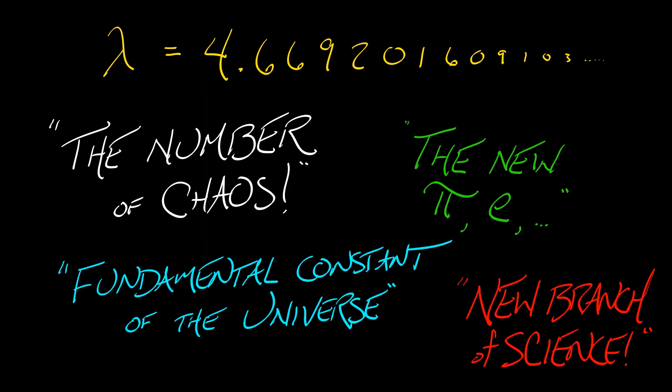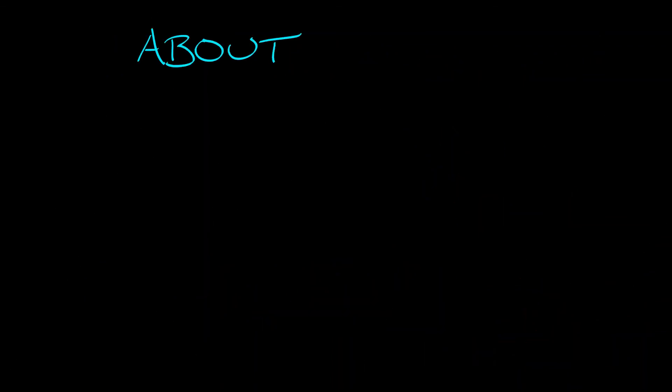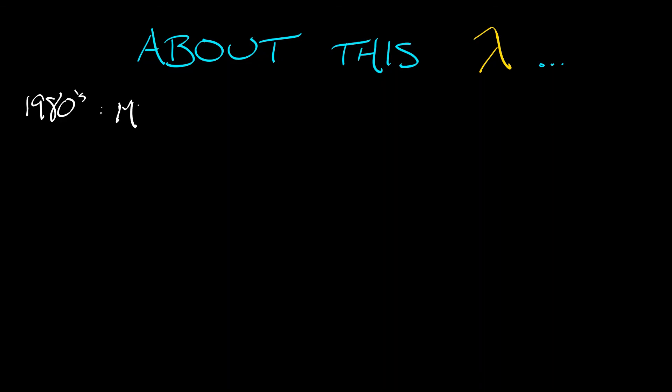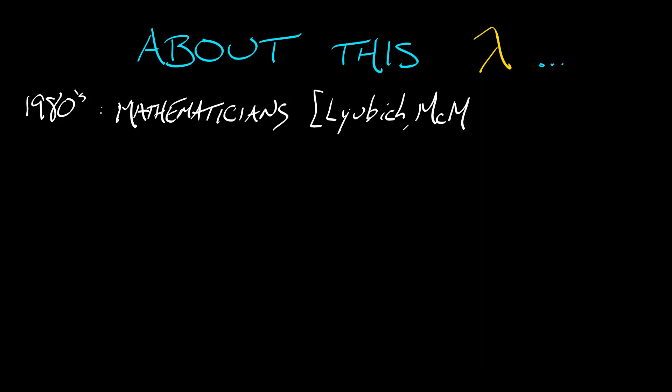It's a little hard to express how frothy things were back then — people were so excited. Now, this is pretty cool, I'm not going to lie. But let's think with a little bit of perspective and hindsight. What is this number lambda? Why do I call it lambda? The physicists did not call it lambda — they gave it a different symbol. After a great deal of effort in the 1980s, several mathematicians, most notably Lubitsch, McMullin, and Sullivan, proved some really key and difficult theorems about this lambda.